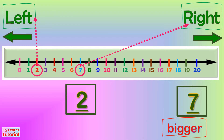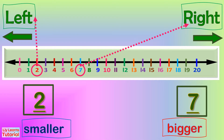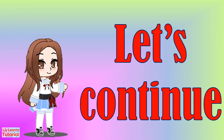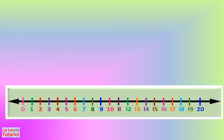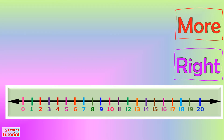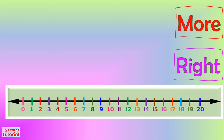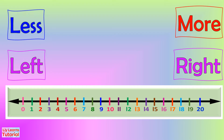Since 7 is at the right side, 7 is bigger. 2 is at the left side, so 2 is smaller. Now that we've reviewed bigger and smaller numbers, let's continue with our lesson. On the number line, numbers at the right side are bigger or more, while numbers at the left side are smaller or less.